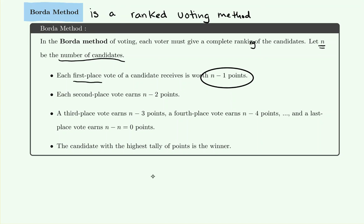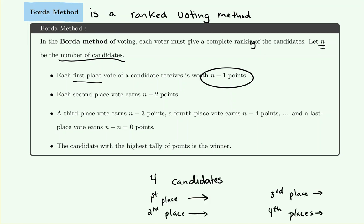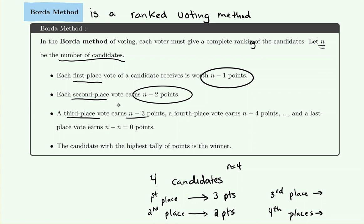For instance, if there are four candidates then n is four, so a first place vote is worth four minus one, or three points. A second place vote is worth n minus two, so four minus two is two points. A third place vote is worth n minus three, so four minus three is one point. The pattern continues: each lower ranking loses one more point.